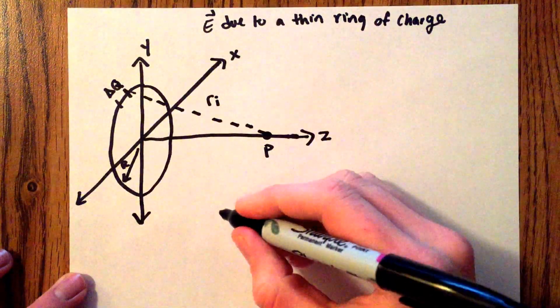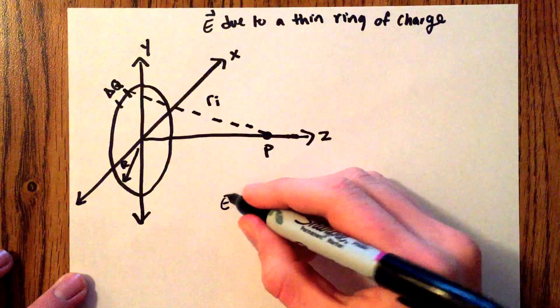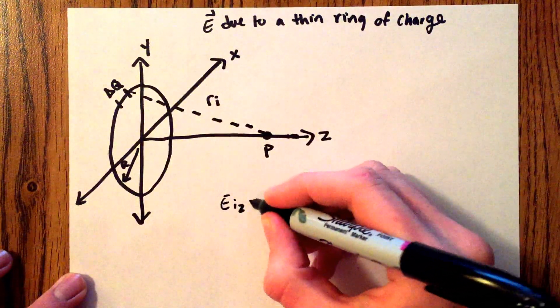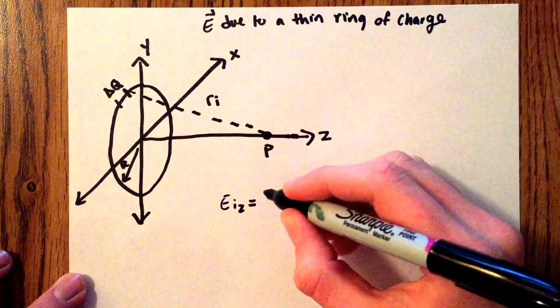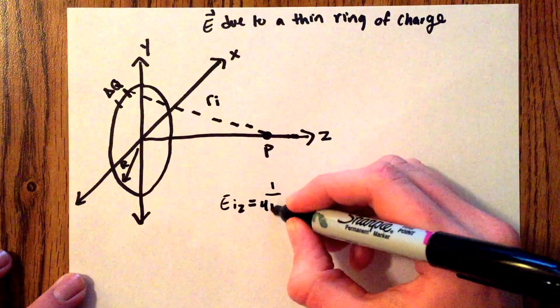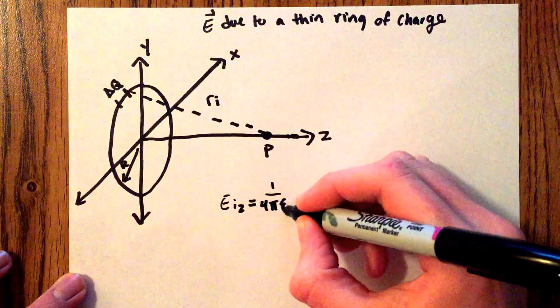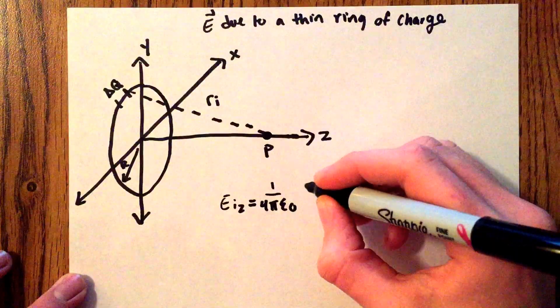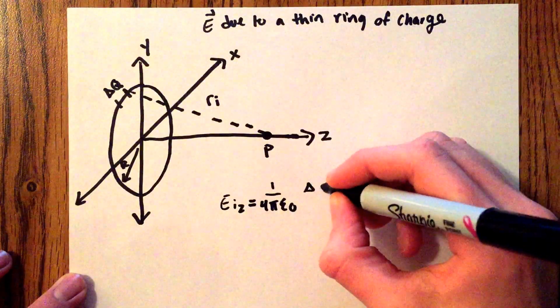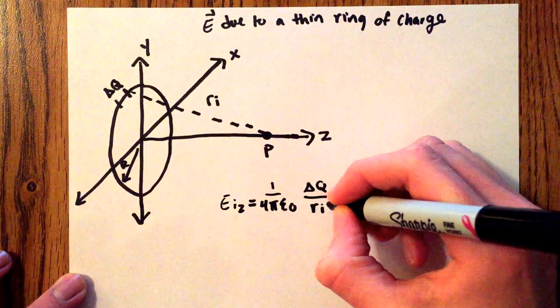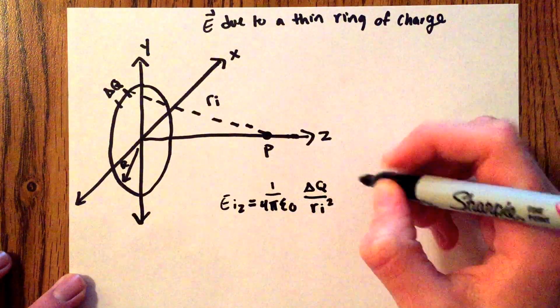Writing the equation, we'll see that E_iz is going to be equal to 1 over 4 pi epsilon naught times our differential charge dq all over r_i squared.